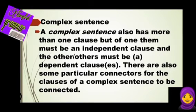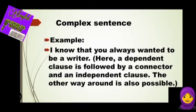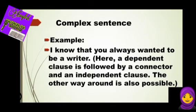Complex sentence. A complex sentence also has more than one clause, but one of them must be an independent clause and the other or others must be a dependent clause or clauses. There are also some particular connectors used to connect the clauses of a complex sentence. For example, 'I know that you always wanted to be a writer.' Here we have a dependent clause followed by a connector and an independent clause. The other way around is also possible. So a complex sentence has one independent and one or more dependent clauses.